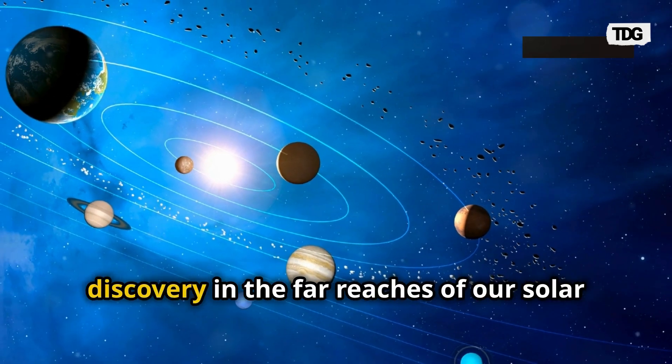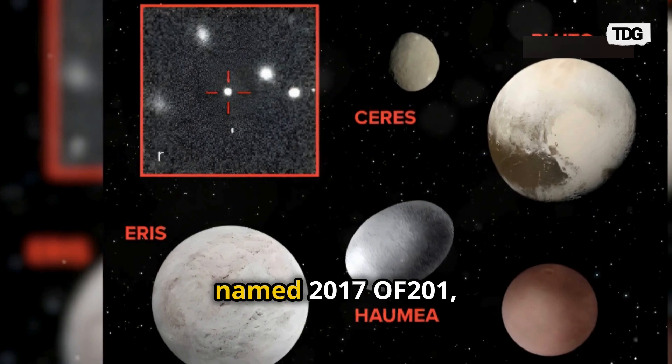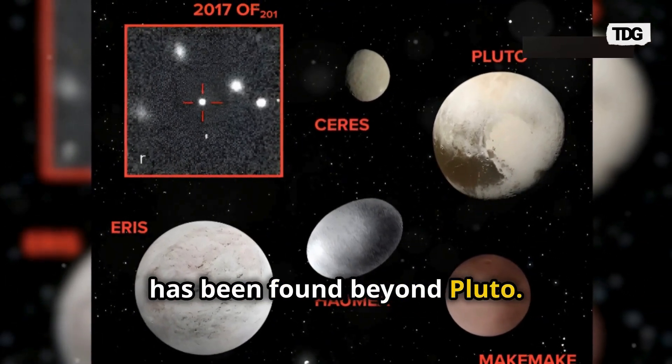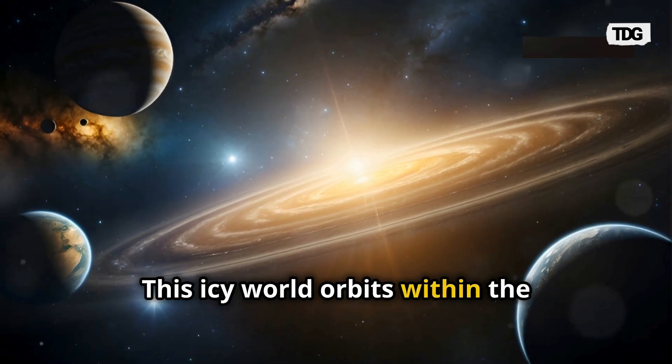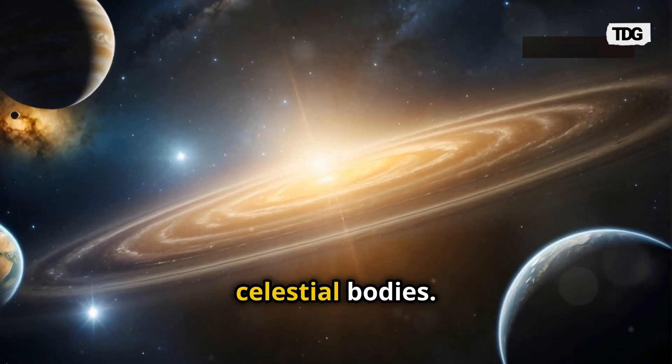Astronomers have made a fascinating discovery in the far reaches of our solar system. A new dwarf planet named 2017 of 201 has been found beyond Pluto. This icy world orbits within the scattered disk, a distant region filled with frozen celestial bodies.